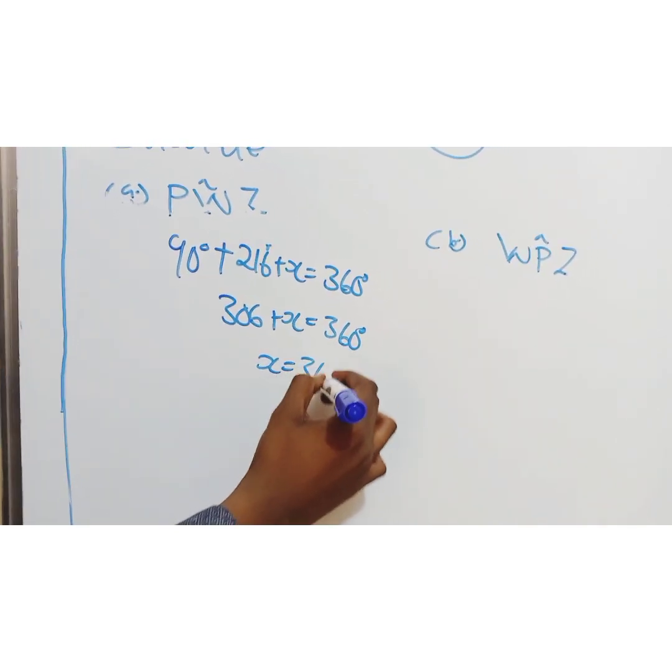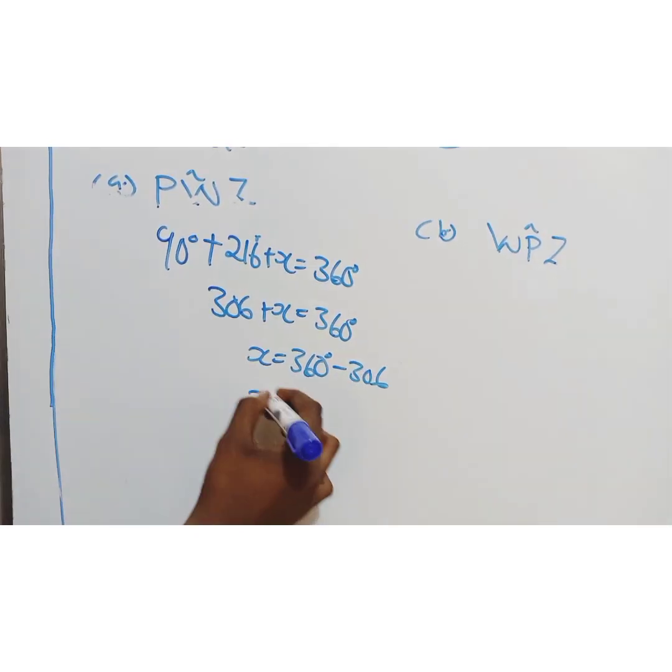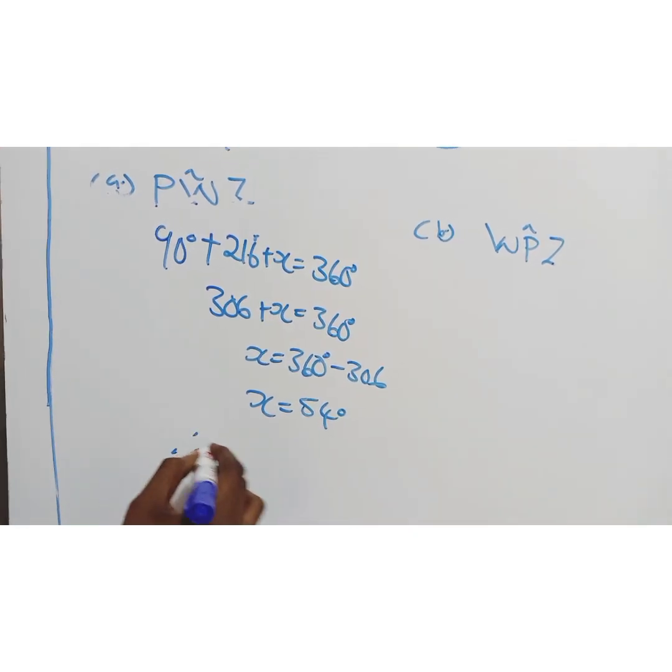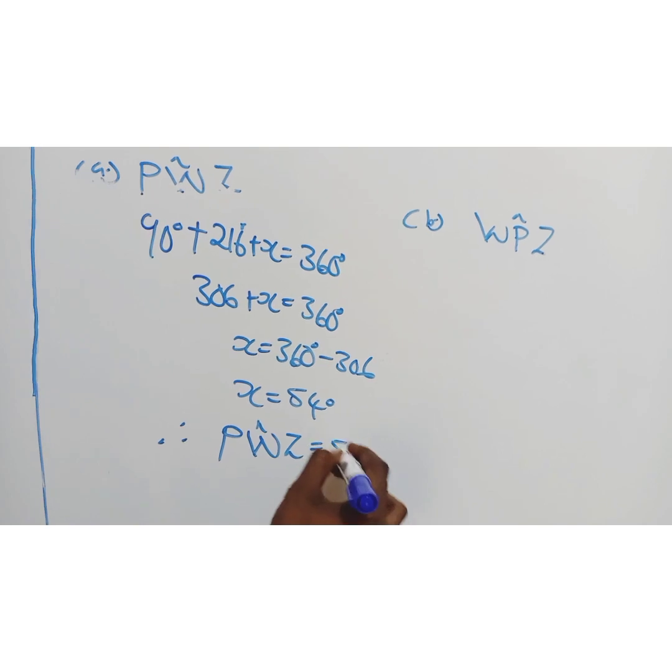So x equals to 360 minus 306. X equals to 54. It's simple as that. So therefore PWZ is 54, this is not bearing, they're asking for an angle.